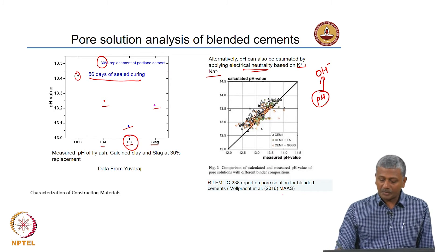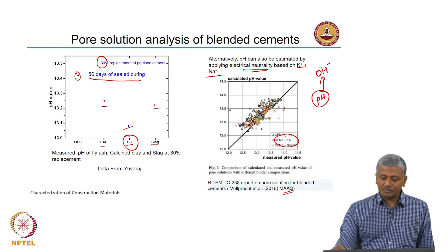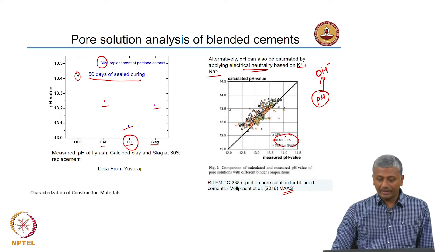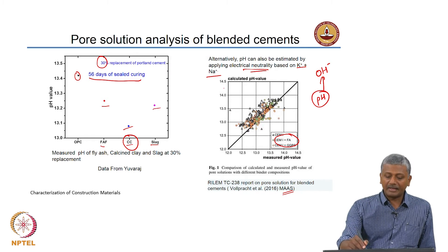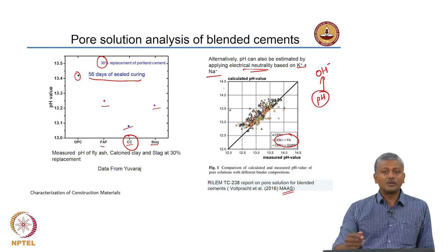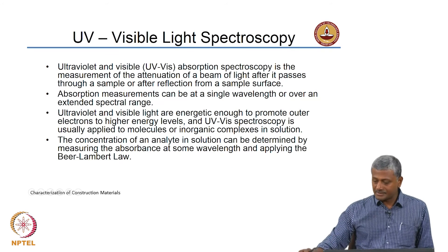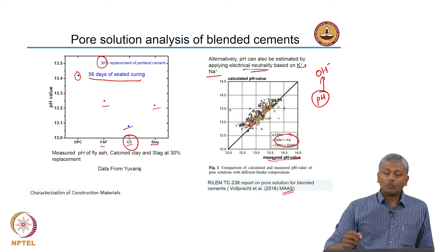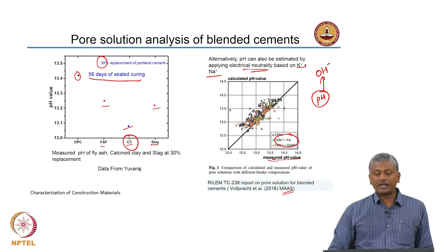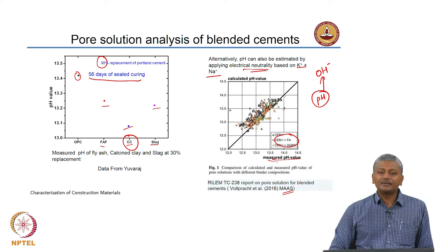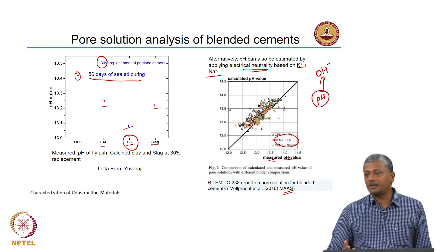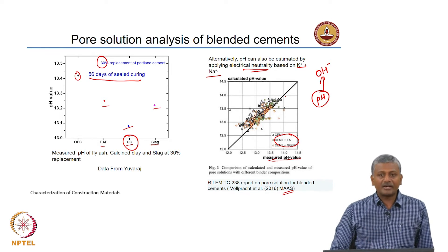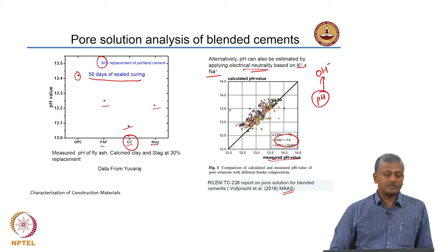This is experimental data published in Materials and Structures for several different cementitious blends incorporating fly ash and slag. The y-axis shows the calculated pH value applying electrical neutrality and the x-axis shows the measured pH value. Most points are situated along the line of equality, indicating that this estimation based on electrical neutrality is significantly reliable for determination of pH.